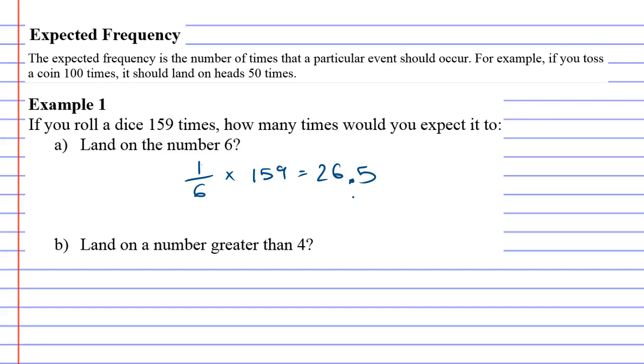Question B: how many times would you expect it to land on a number greater than 4? The numbers greater than 4 are 5 and 6, so there's a 2 in 6 chance that you will get either a 5 or a 6.